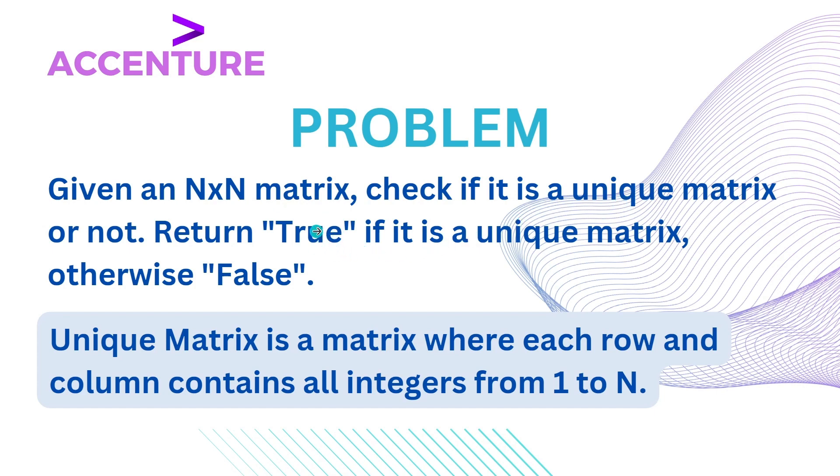We need to return a string value of true if it is a unique matrix, otherwise we return false. What does unique matrix mean? The problem statement says that a matrix where each row as well as column contains all the numbers from 1 to n is said to be a unique matrix.